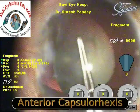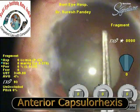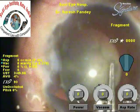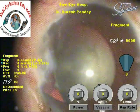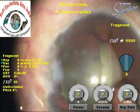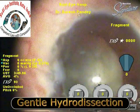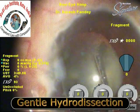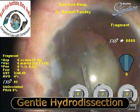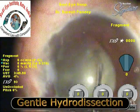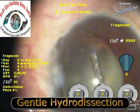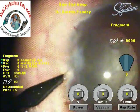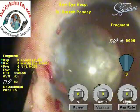The capsulorrhexis is difficult in these cases as there is no counter-traction on the anterior capsule. It should always be initiated in the area away from the capsular dehiscence, and if counter-traction is very low, a second instrument can be used to provide it on the capsular surface. A gentle hydrodissection is performed — this is important because if cortical fibers are not freed, pulling on them may risk enlargement of the area of dehiscence.